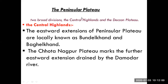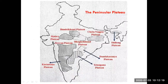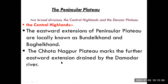The peninsular plateau has two broad divisions: the Central Highland and the Deccan Plateau. The eastward extension of the Central Highland is locally known as Bundelkhand and Bagelkhand. The Chhota Nakpur Plateau marks the further eastward extension of the Central Highland, and it is drained by the Damodar River.